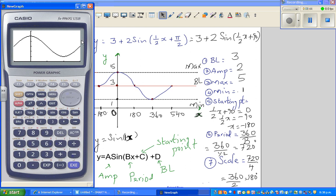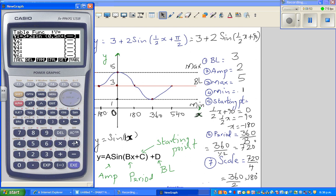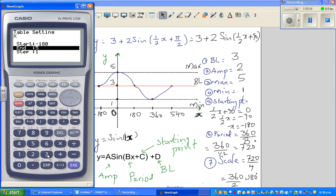This is the graph. If you want to see this on your table menu, go to your table menu, and I'll scroll this out to check your values. Set, I want to go from minus 180 to 540, so scale of 180 degrees, step of 180. Can you see? At minus 180, it is 3. At 0, it is 5. At 180, it is 3 again. At 360, it is 1. And at 540, it is 3. So this is how you can check.